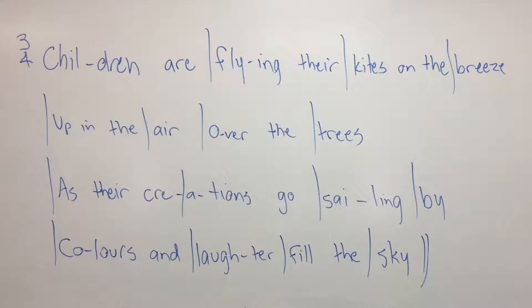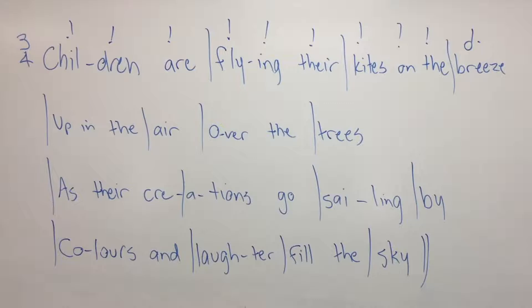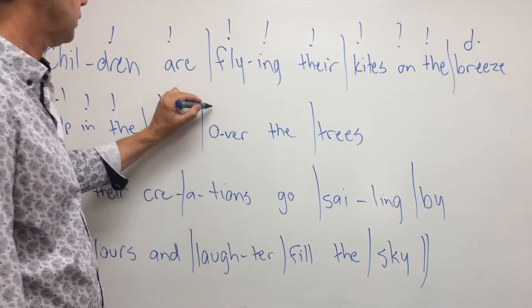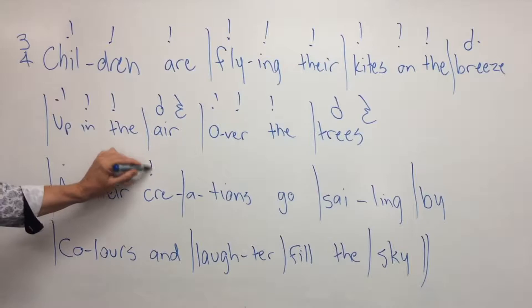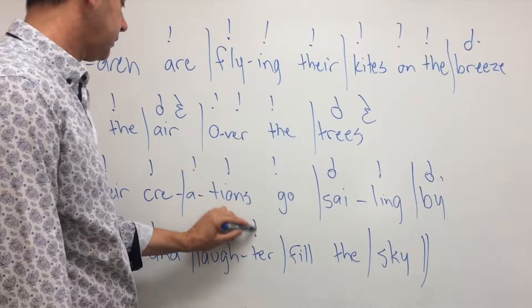It's time to create the rhythm. And again, the information comes from the text. Let's put in the rhythm. Children are flying their kites on the breeze — now there's a whole bar for 'breeze'. Rhythmically things are looking a little dull and uninteresting at this stage, but don't be too concerned. There are tricks we can do to make the rhythm more interesting later. Up in the air — another whole bar. Over the trees. As their creations go sailing by. Colours and laughter fill the sky.